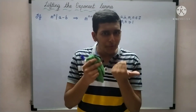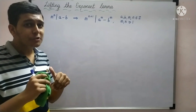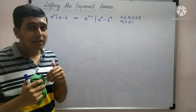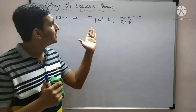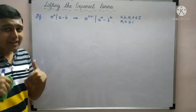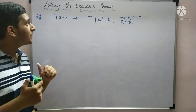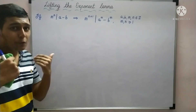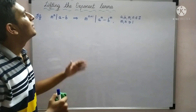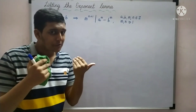Hello everyone. In today's video, we will be proving the Lifting the Exponent Lemma. It states that if we have integers a, b, m and n such that m raised to n divides a minus b, then m raised to n plus 1 divides a raised to m minus b raised to m. Note that m and n hold positive values.